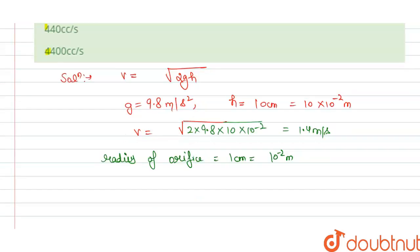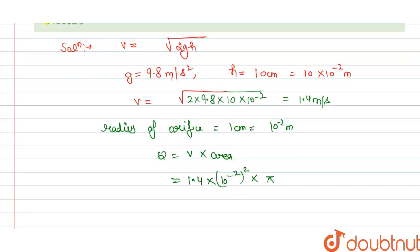So rate of flow of liquid through the orifice will be Q equals v into area, so v is 1.4 into pi r square.